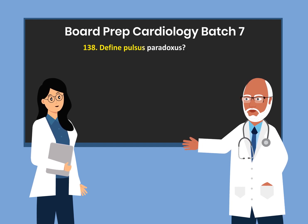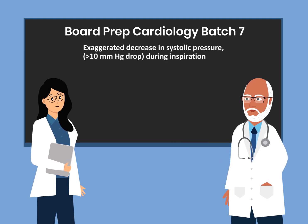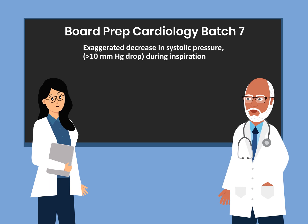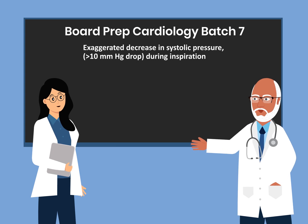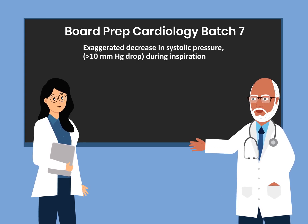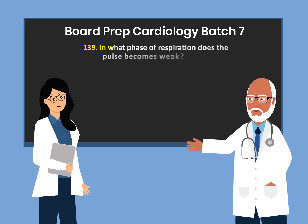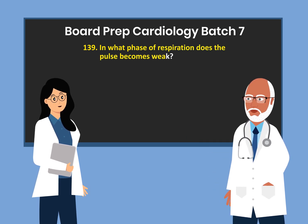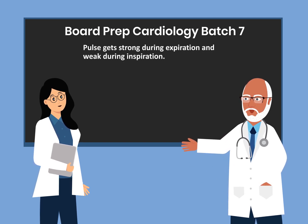Question 138. Define pulsus paradoxus. Question 139. It is an exaggerated decrease in systolic pressure greater than 10 mmHg during inspiration. Under normal conditions during inspiration, there is a decrease in systolic pressure. With pulsus paradoxus, this decrease is greater than 10 mmHg. In what phase of respiration does the pulse become weak? The pulse gets strong during expiration and weak during inspiration.